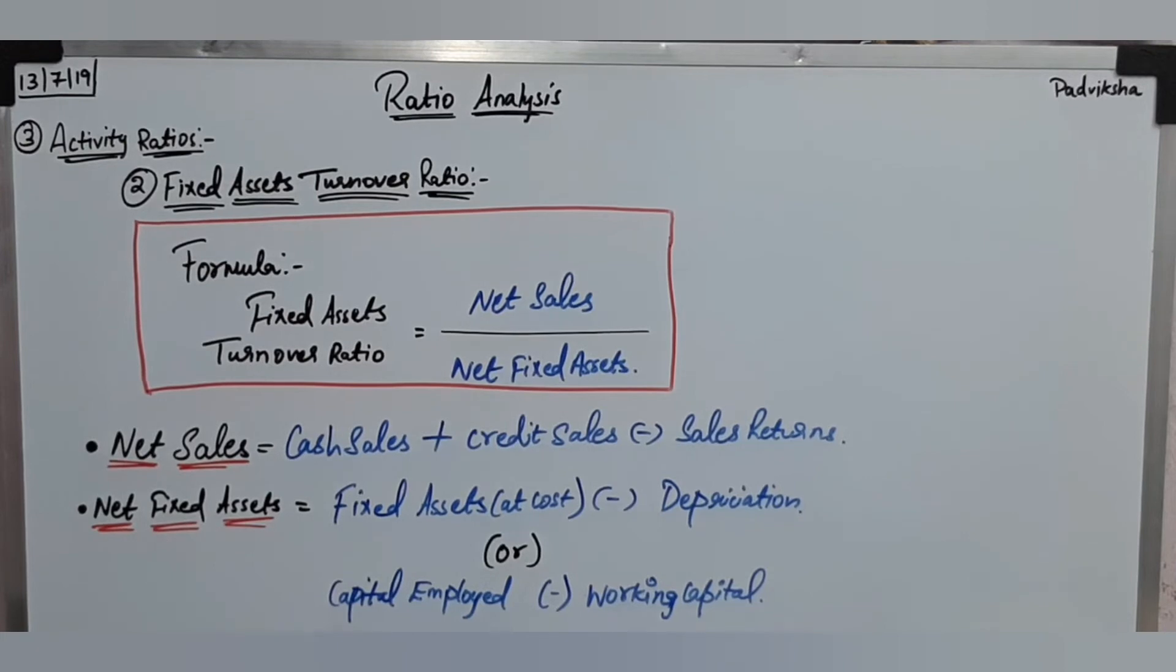Fixed assets turnover ratio establishes a relationship between net sales and net fixed assets. What do we need to know about the fixed assets turnover ratio? We will know how many fixed assets are used to generate net sales. If you have a company, how many sales are there? We will utilize net fixed assets to generate those net sales.